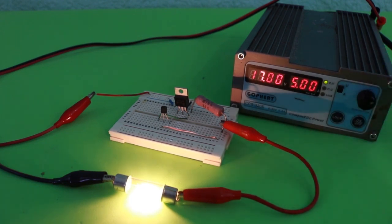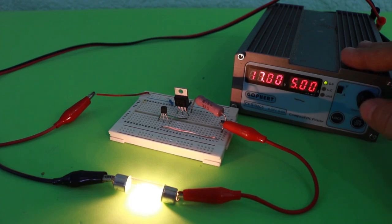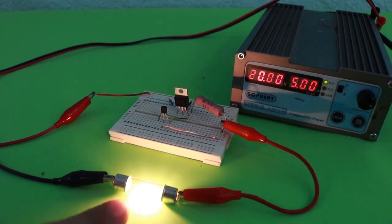Let's put 17 volts. The current only changes a few milliamps, so it is stable. Let's put 20 volts, you can see that the lamp doesn't change intensity, because the current stays constant.